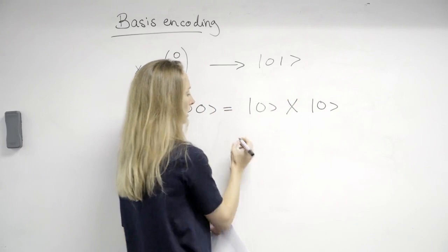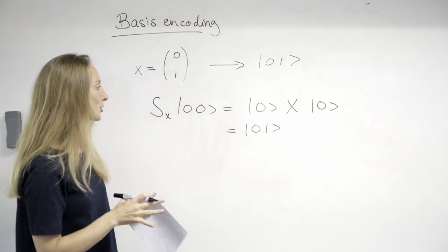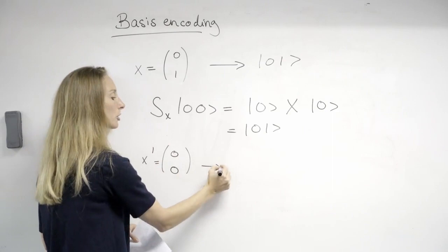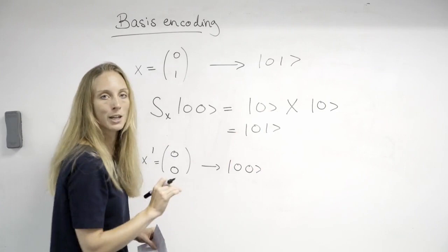Now how does this give rise to a kernel? Basically we had here x, and let's say we now have also x dash which is 00 and we encode it into a quantum state |00⟩. The state preparation routine is trivial because we don't have to actually do anything because the ground state is actually our quantum state representing the input.